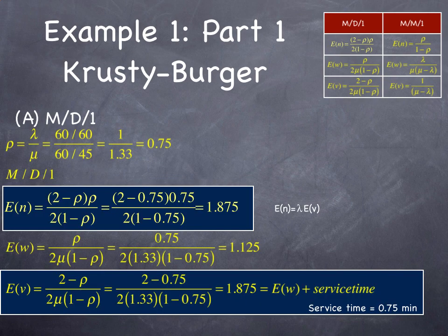We have one customer every minute, and the service rate is one customer every 45 seconds. We have to convert one customer every 45 seconds to the number of customers per minute. So one customer a minute is 1, one customer every 45 seconds is 1.33 customers per minute, or 0.75 minutes per customer.